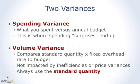The two variances for fixed overhead are spending and volume. Spending is what you spent versus what you thought you should have spent at the beginning of the year — your annual budget or static budget. This is where spending surprises end up. If you spend too much or don't spend on something you planned to use, that difference shows up in your spending variance. The volume variance is the difference between how much activity you used to make the rate and how much activity you ended up having. It is always done at standard, so it doesn't capture any inefficiencies or price swings — you always use your standard quantity to calculate your volume variance.